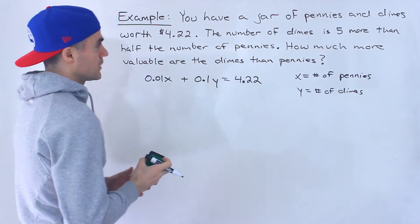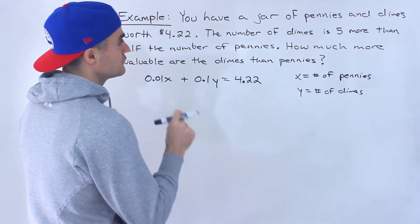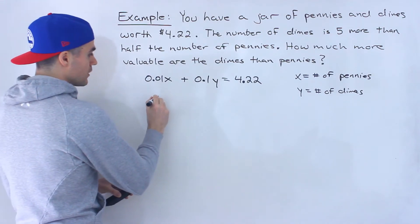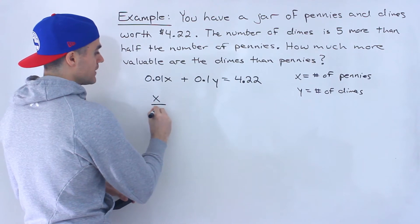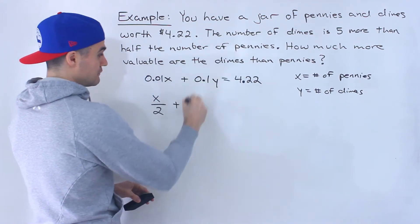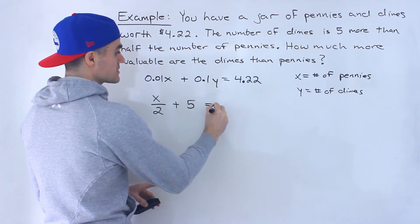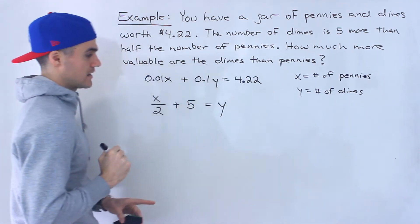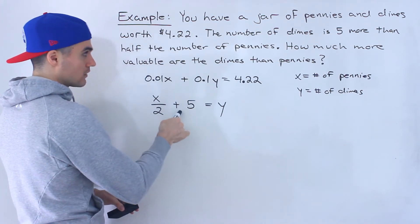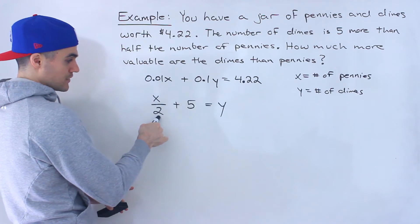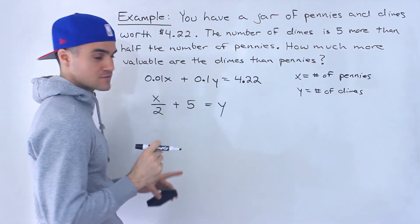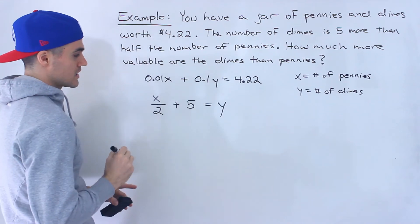That's one equation that we can make. Notice that it says the number of dimes is five more than half the number of pennies. So if we take the number of pennies and divide it by 2, and then take that value and add 5 to it, that's going to give us the number of dimes. The number of dimes is five more than half the number of pennies. You got to read these sentences very carefully when you are setting up the equation.